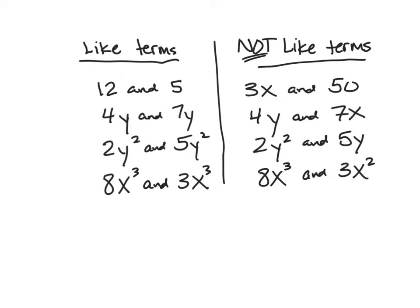One more unlike term example: 3y² and 3x². Yes, they are raised to the same power, but they are different bases — this is not going to end up being the same number, so these can't be put together either. It's just getting our brain to wrap around: what items can I marry together, and what items can I not put together? That's what this lesson will address.